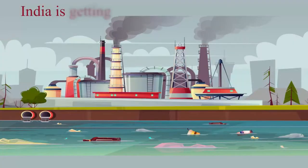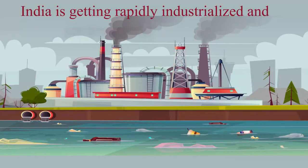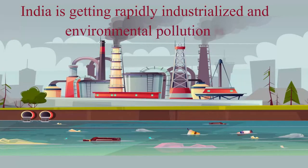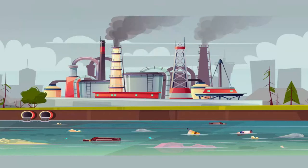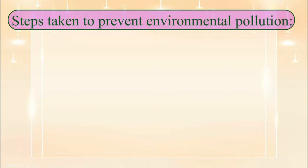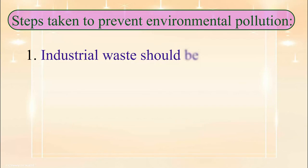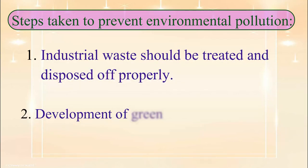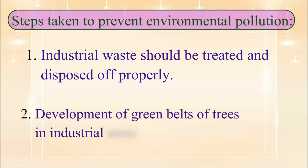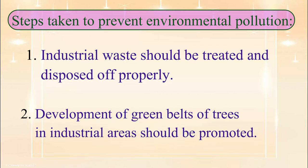India is getting rapidly industrialized and environmental pollution is also increasing simultaneously. Steps should be taken to prevent environmental pollution — industrial waste should be treated and disposed of properly. Development of green belts of trees in industrial areas should be promoted.